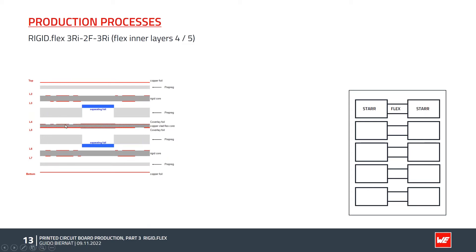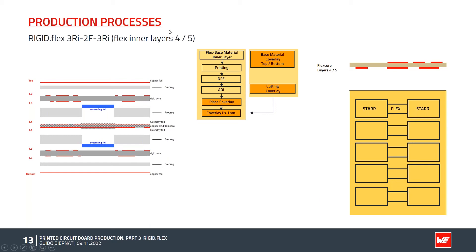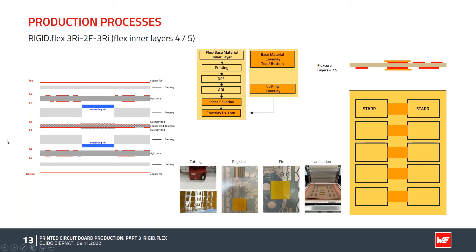For the flex core, the processes include: pretreatment, resist laminating, exposure, development, etching, cleaning, and AOI (automated optical inspection). What's special here is that the base material cover layer must be cut on a cutting machine. This cutting step registers and fixes the cover layer on the inner layer for lamination.